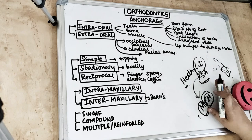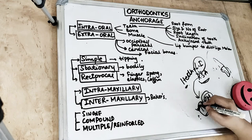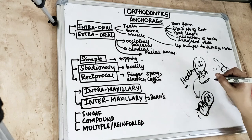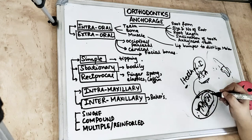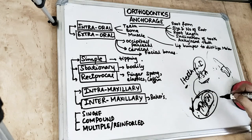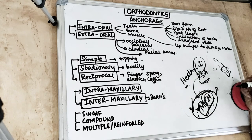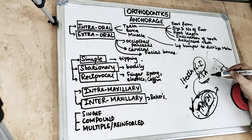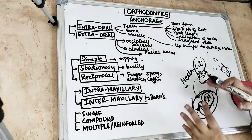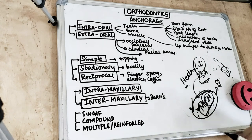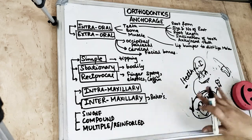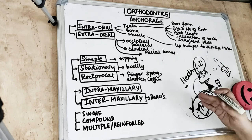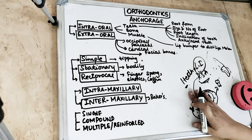The resistance offered by the anchorage unit should be greater than that offered by the tooth being moved, and the root surface area should be greater. If the root surface area of the anchor teeth is less, the anchor tooth itself will start moving, leading to loss of anchorage and no desired tooth movement.